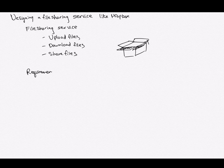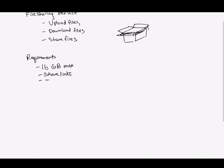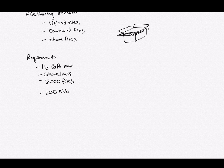First, we need to talk about the requirements of this kind of service. The requirements are going to be very large. We already know that this is a distributed system. Let's say that the files can be 16 gigabytes maximum. The files can also be shared with a link — a person will get the link and then they can go directly to the Dropbox website to view and download it. Let's say that an average user has 2,000 files, and 200 megabytes is the average file size.